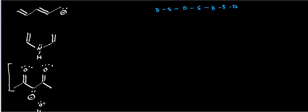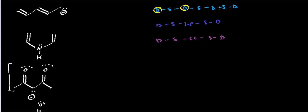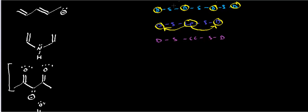Another pattern we can have is double, single, lone pair, single, double. The other one is double, single, carbocation, single, double, and so forth. Because each set of pi electrons is separated from the double bonds by one single bond, we say this lone pair is in resonance with that double bond, and so forth — all of these pi electrons and double bonds are in resonance with each other.